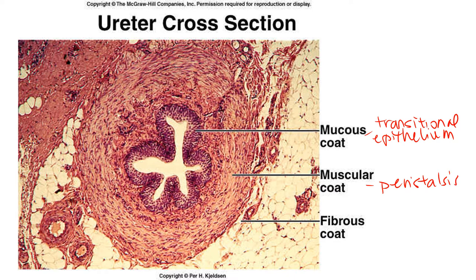The fibrous coat is a connective tissue layer, also called the adventitia layer, on the outside surface. As a side note, there is a lot of adipose tissue surrounding the ureter in this picture.